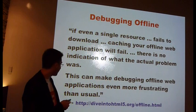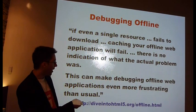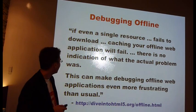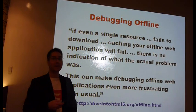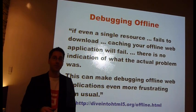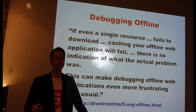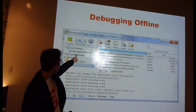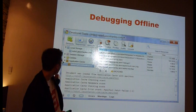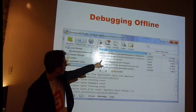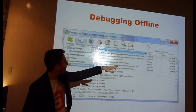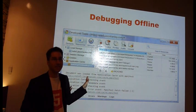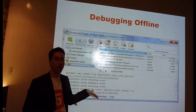Debugging offline — there's this statement from the great diveinto.html5.org website, which I'd encourage all of you to check out. It says debugging offline web applications can be even more frustrating than usual — and I can definitely say that's the truth, especially if you want to get it working on an iPad. In Chrome, though, you do have a little bit of help. If you go to the application cache section, it will give you some debugging messages, show you all the things that are cached, size, and that kind of thing. Unfortunately on a lot of other devices, you don't have that luxury and you just have to keep trying until you get it right.